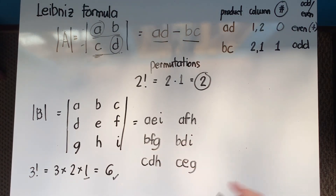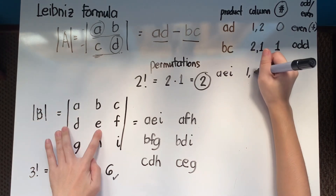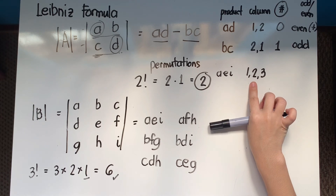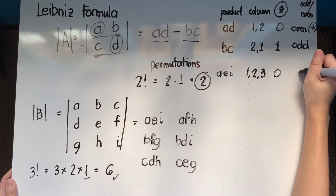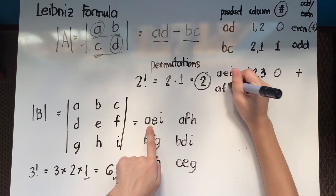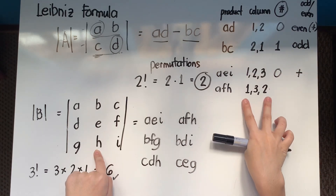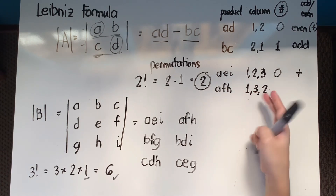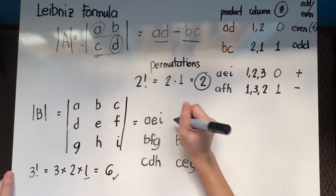Now let's determine the signs. For 'aei': columns are 1, 2, 3 — already in order, so 0 permutations, which is even — positive. For 'afh': columns are 1, 3, 2 — one swap of positions 2 and 3 restores order — 1 permutation, odd — negative. For 'bfg': columns are 2, 3, 1 — requires 2 permutations to restore to 1, 2, 3 — even — positive.